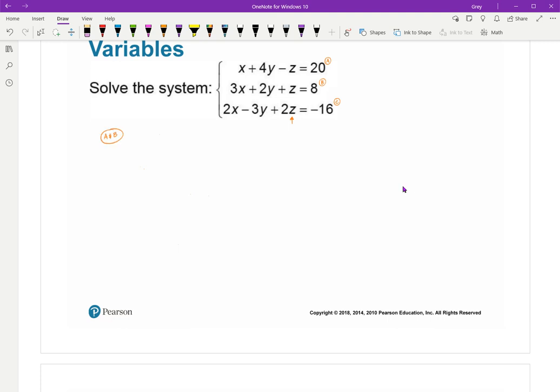It's easiest to make the Z fall out. If I add the first two equations together, A and B, I'm adding them. X plus 3X is 4X. 4Y plus 2Y is 6Y. And 20 plus 8 is 28.